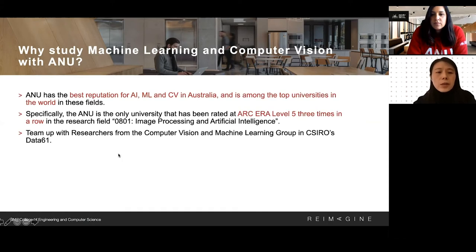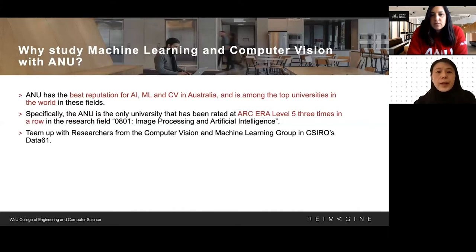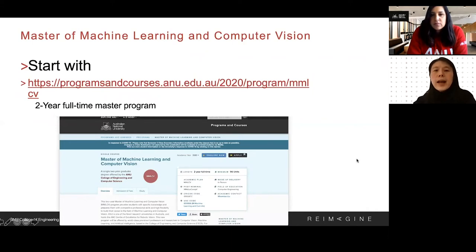We also team up with researchers from the computer vision and machine learning group in CSIRO's Data61. CSIRO is Australia's science and technology centre. Now I'll introduce some details about our Master of Machine Learning and Computer Vision program.